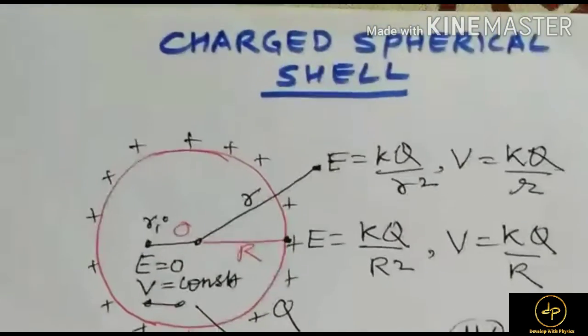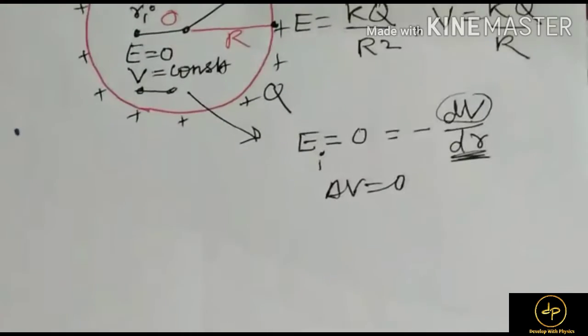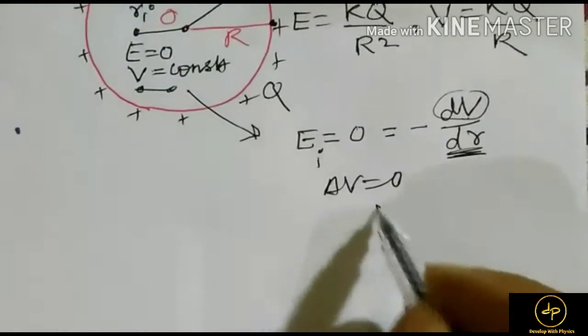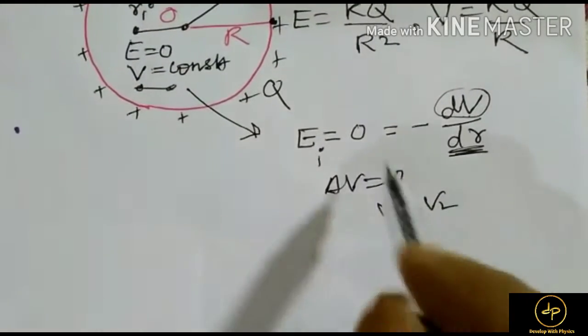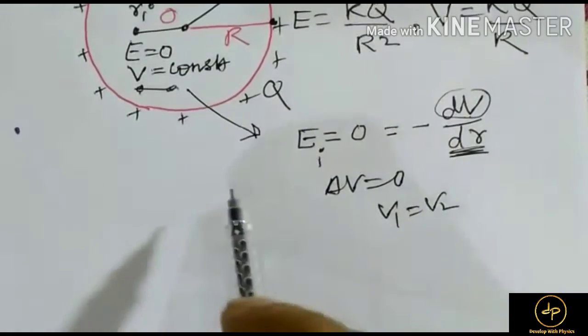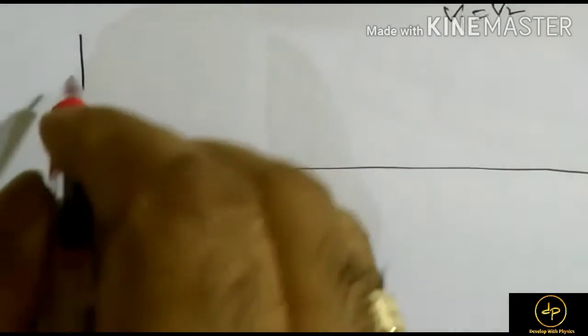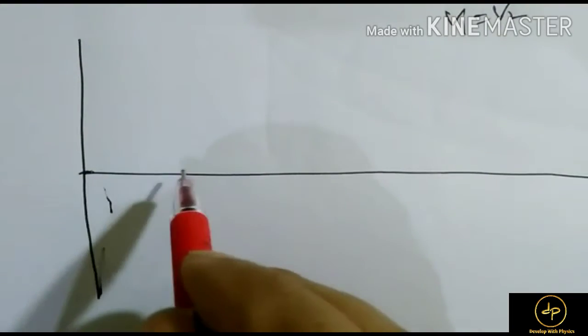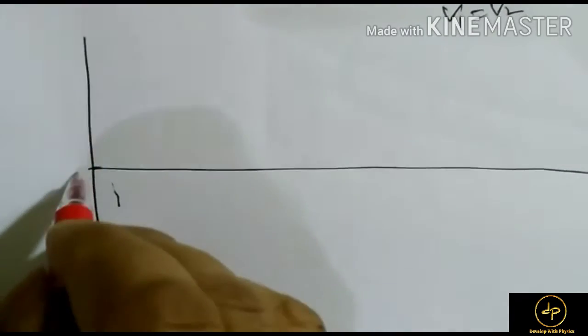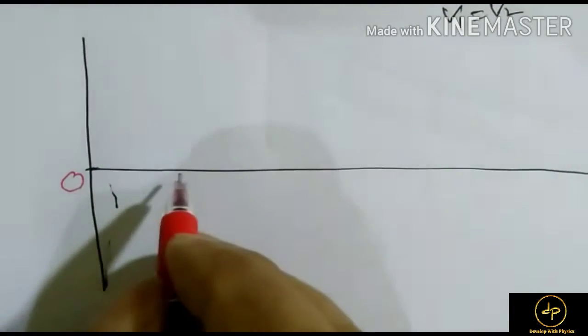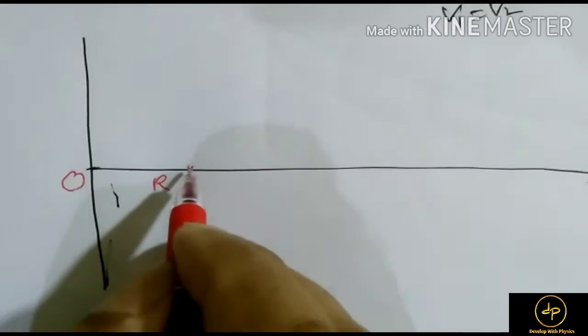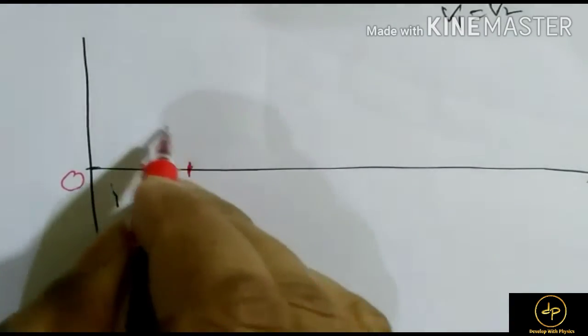V1 equals V2 for any two points inside—potential is constant. Let us draw the variation of field. This is the center of the sphere, and this is capital R, the radius of the sphere.